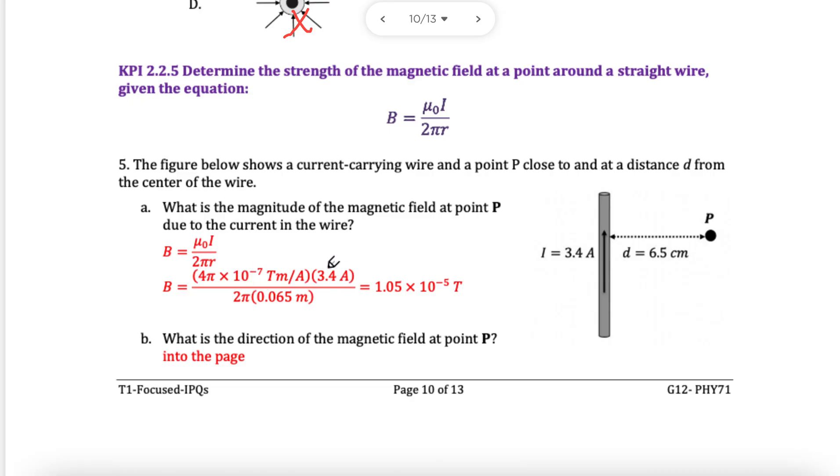B equals mu i over 2 pi r. We have mu, 4 pi times 10 to the minus 7. Multiply by i, which is 3.4. Divide by 2 pi times r, which is 0.065 meters. We calculate this, don't forget the unit, Tesla. Unit for B is Tesla. You will lose marks if you don't write the unit. Please make sure you remember all the units.